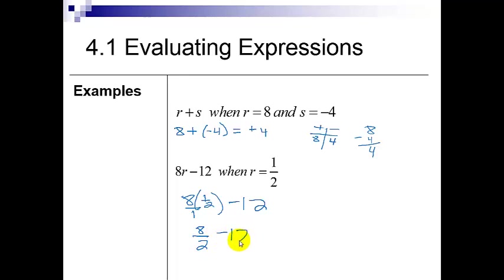8 times 1 is 8, 1 times 2 is 2—oh, 8 divided by 2, because the fraction is division. 8 divided by 2 is 4. 4 minus 12. We're still having to deal with the negative. Yeah, we still have to work with the negatives.